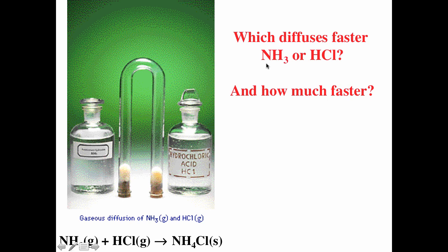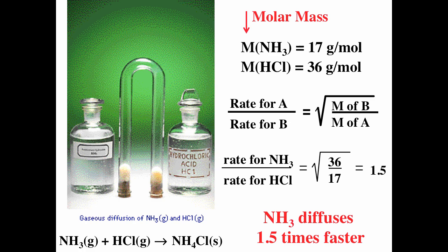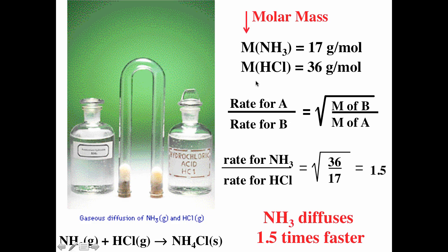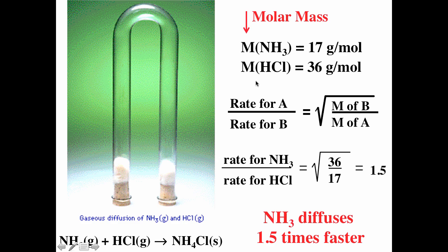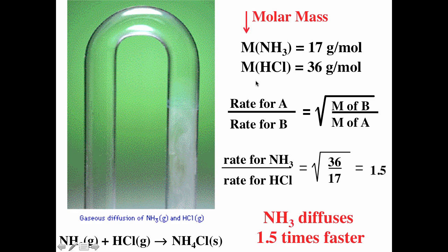For example, which diffuses faster — ammonia or HCl? Nitrogen is 14 g/mol and hydrogen is 1, so ammonia (NH₃) is 17 g/mol. Chlorine is 35.5 g/mol and hydrogen is 1, so HCl is about 36.5 g/mol. So ammonia should diffuse about 1.5 times faster than HCl. When ammonia and HCl react they form a white solid. With ammonia on one side and HCl on the other, the reaction occurs mostly on the right side of the tube because NH₃ is lighter and diffuses faster — where the two meet, ammonium chloride is produced.